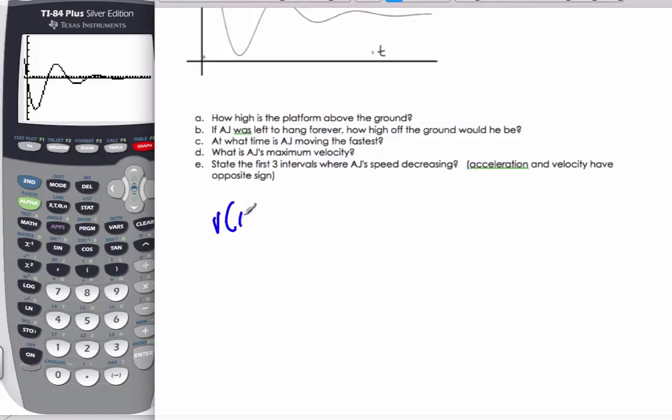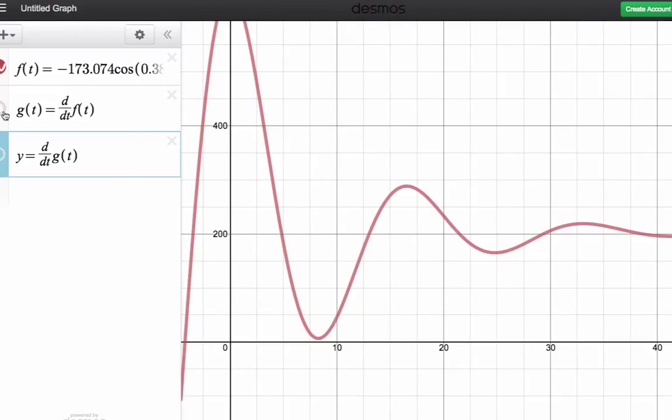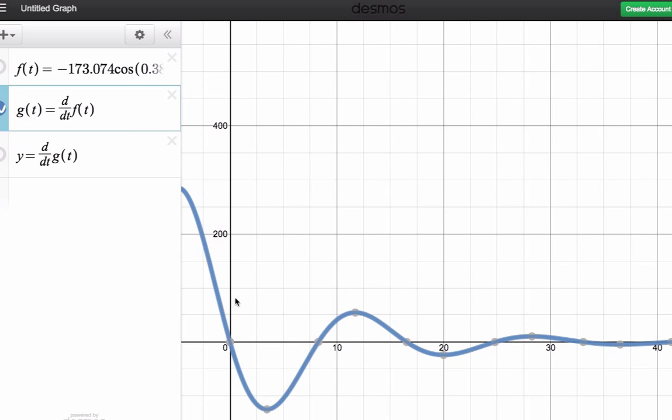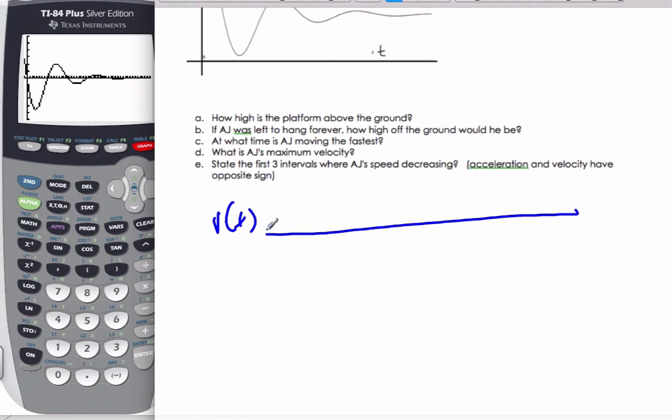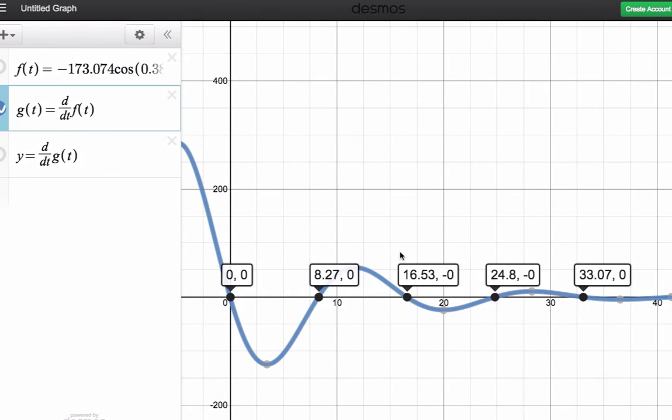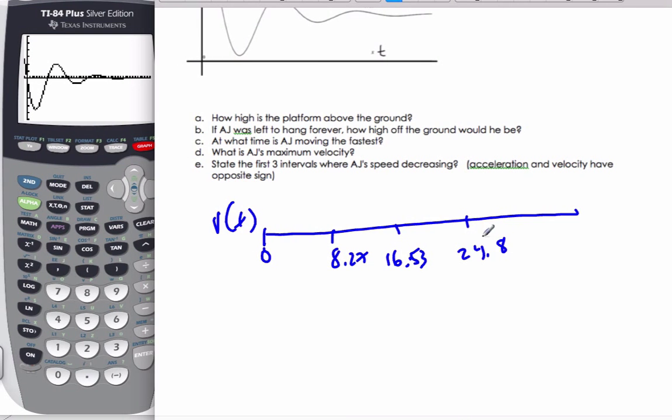So I'm going to switch over. I'm going to switch over to Desmos just for efficiency and being able to see it. Here is my original function. Here is my derivative, this is the velocity curve. And I can see that here are my values for the x-intercepts. So I can say at 0, 8.27, 16.53, and 24.8. And I know the velocity went negative, positive, negative, positive. And there's more to go, I don't know if we'll need it though.